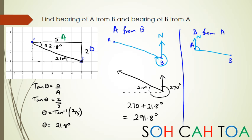But if I look at bearing of B from A, then this is what it looks like. I know that the little angle here is going to be 21.8 degrees and I have 90 here, so it's going to be 90 plus 21.8 degrees, which means it's going to equal 111.8 degrees.